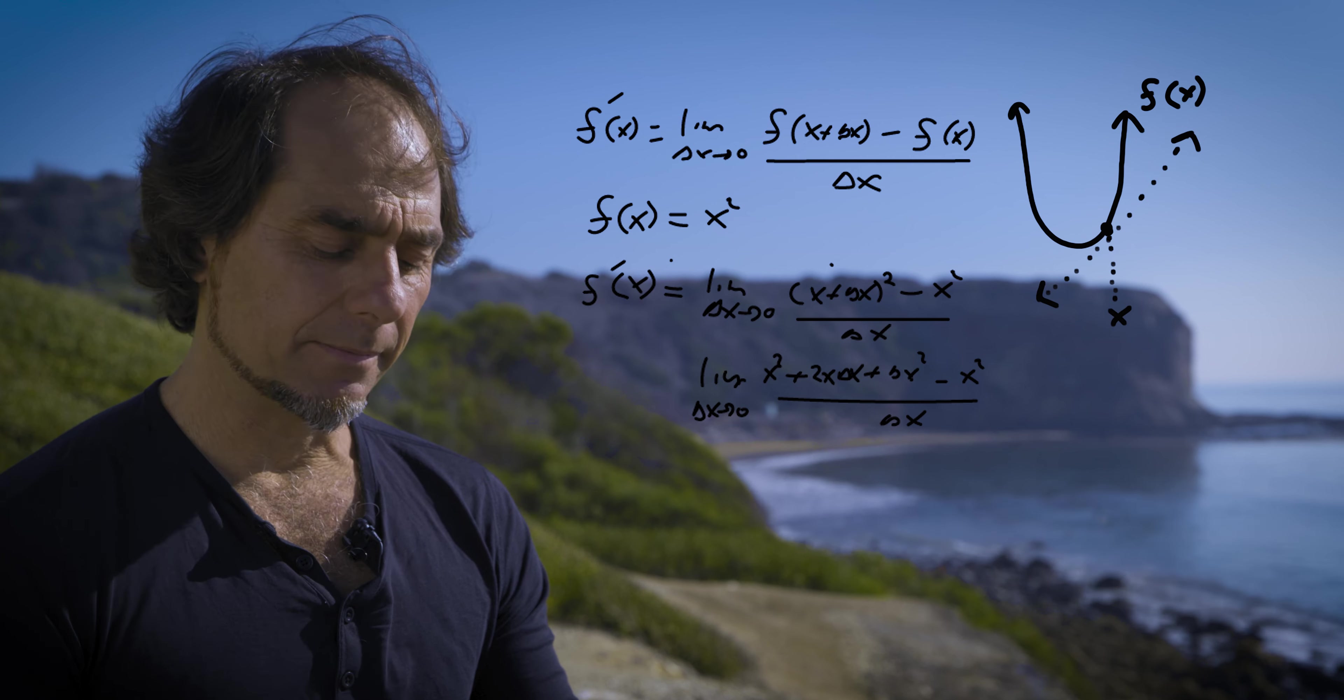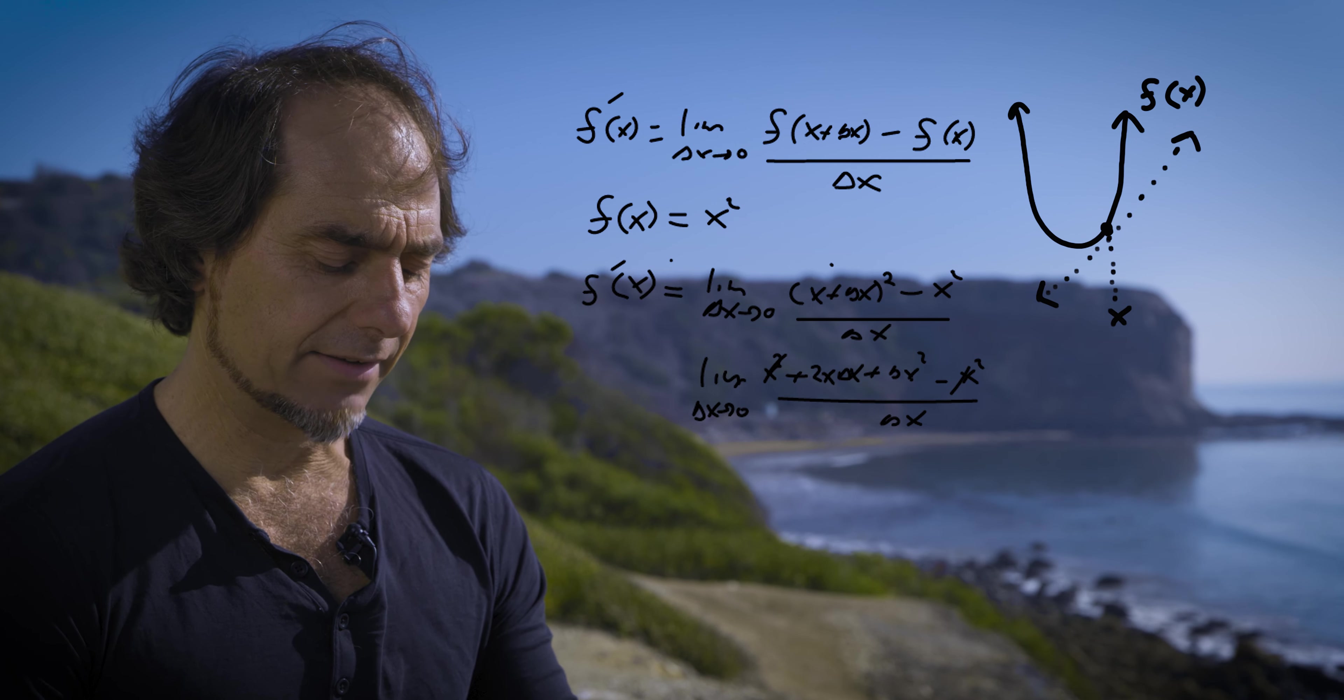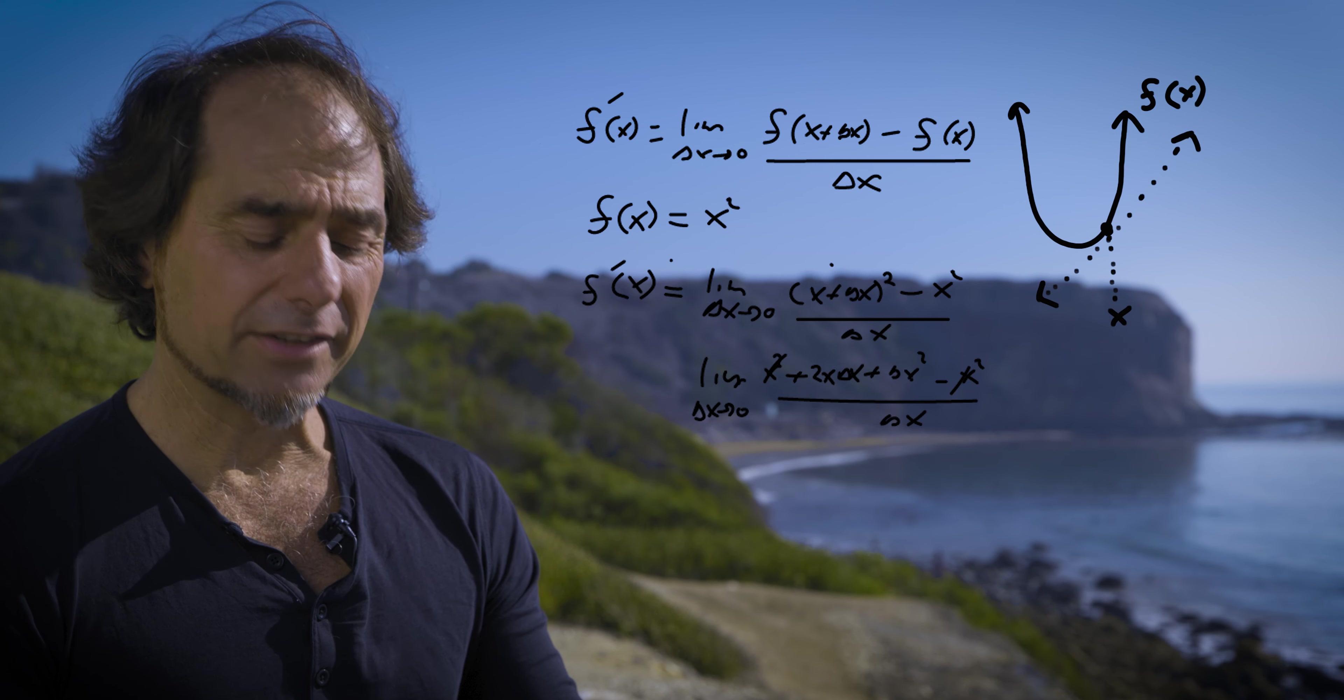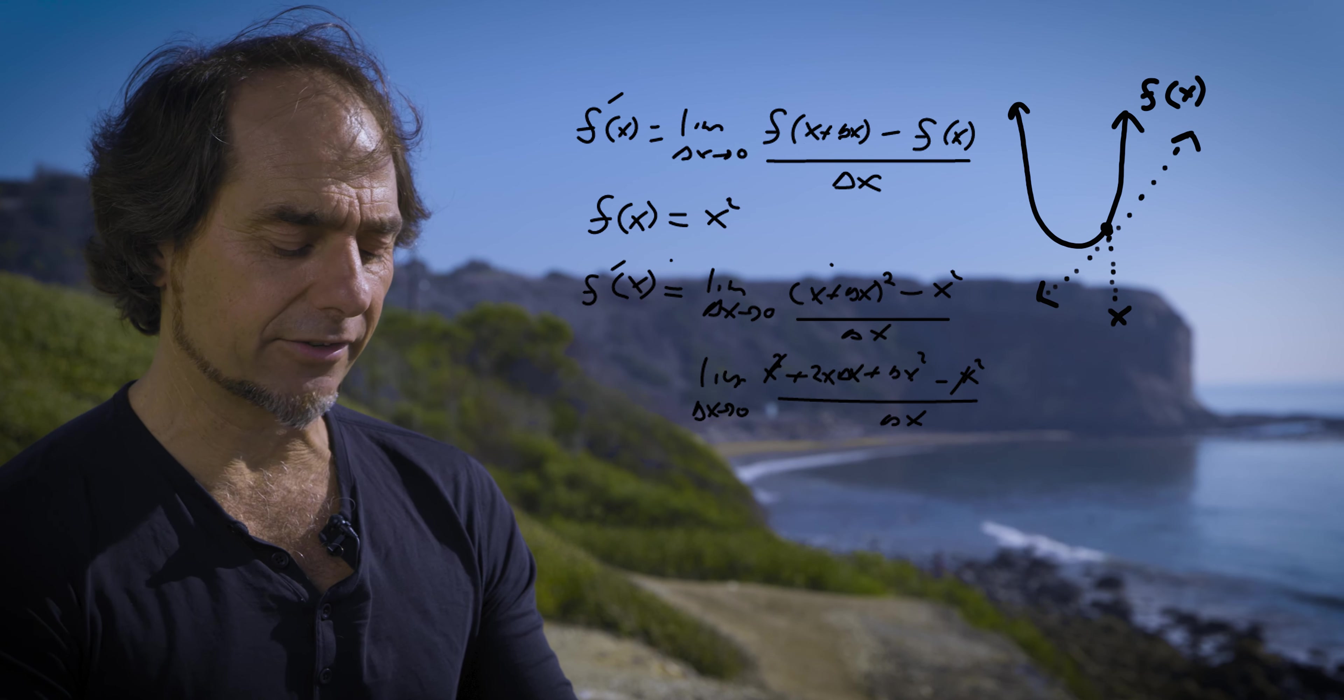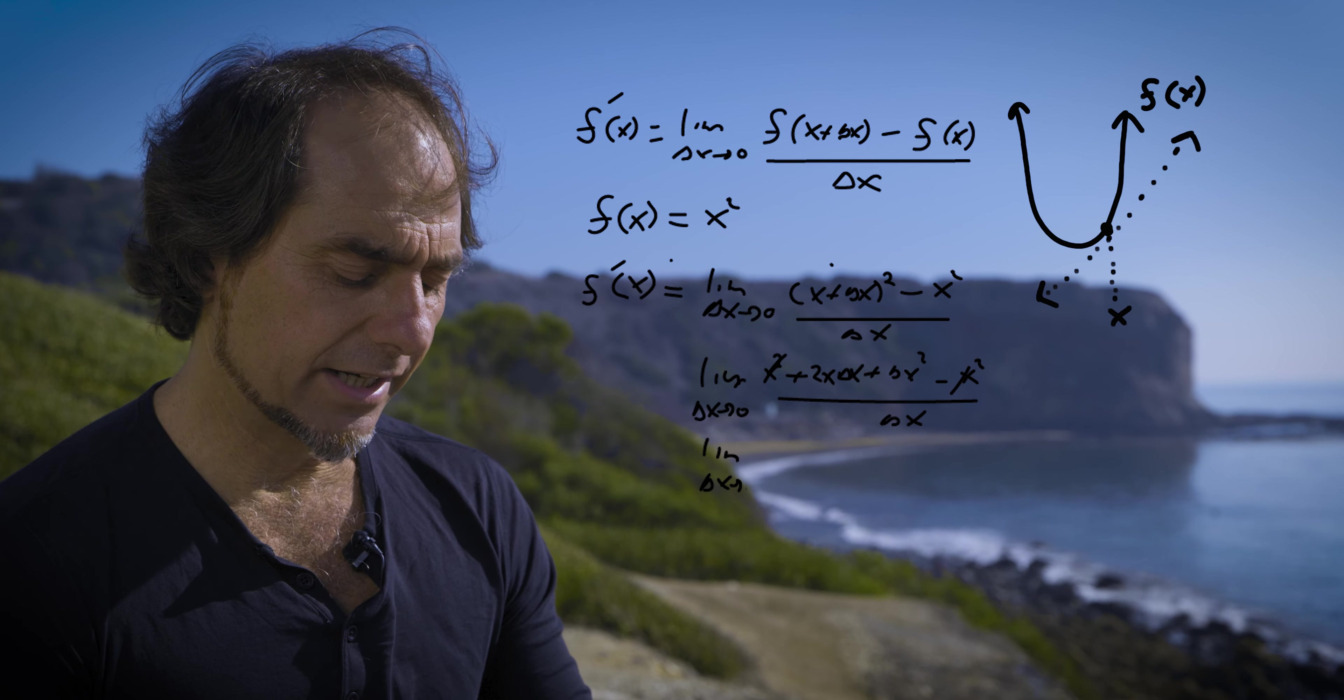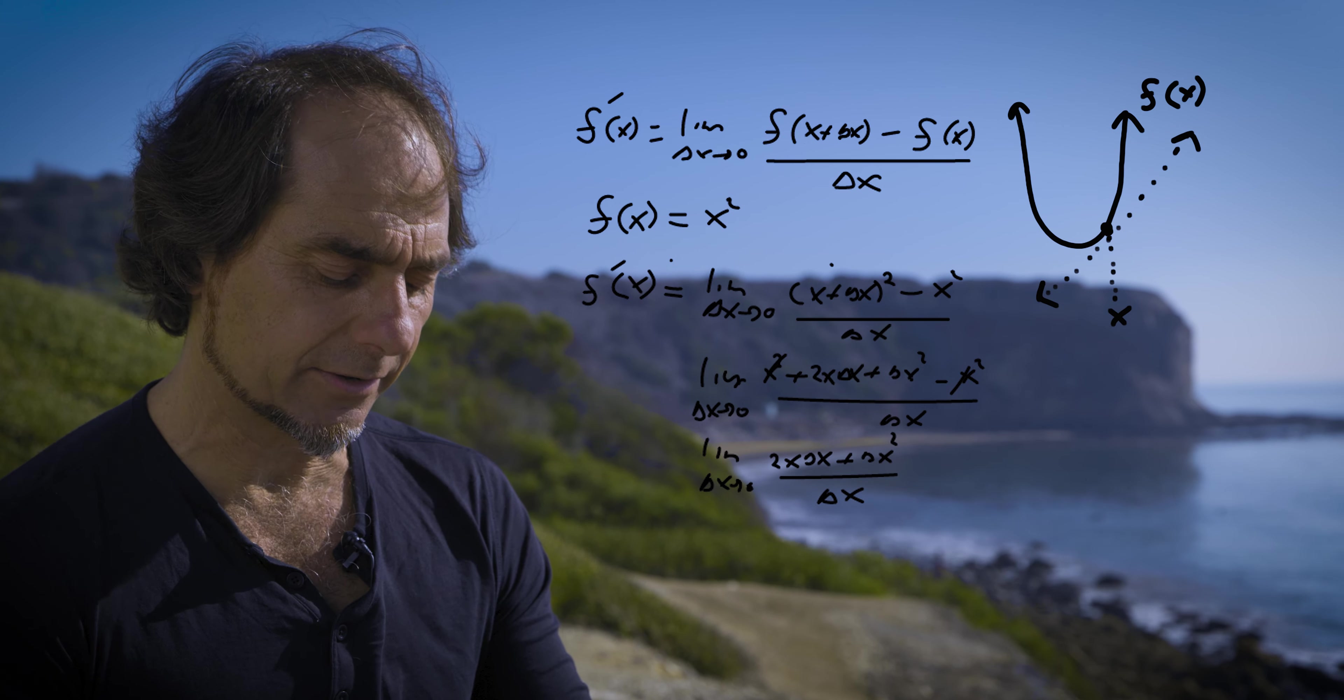So now let's do some cleanup. I have an x squared here. I have a negative x squared. Good night. Have a nice day. I'm left with 2x delta x plus delta x squared all over delta x. So let's rewrite that: 2x delta x plus delta x quantity squared all over delta x.